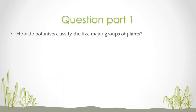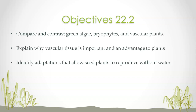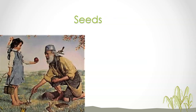Question part one: how do botanists classify the five major groups of plants? I want these questions emailed to me or put on LMS. Objectives for section two: compare and contrast green algae, bryophytes, and vascular plants; explain why vascular tissue is an advantage to plants; and identify adaptations that allow seed plants to reproduce without water.